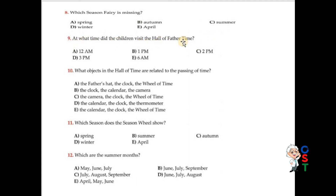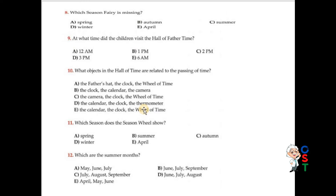Question number nine: At what time did the children visit the Hall of Time? Options are 12pm, 1pm, 2pm, 3pm, and 6pm. D is correct — 3pm. Question number ten: What objects in the Hall of Time are related to the passing of time? The father's hat is not related. Camera is incorrect. Thermometer is incorrect. The calendar, the clock, and the wheel of time are all related to the passing of time. E is correct.